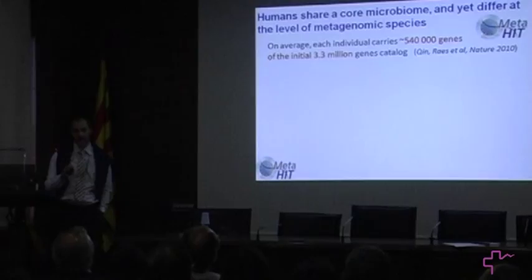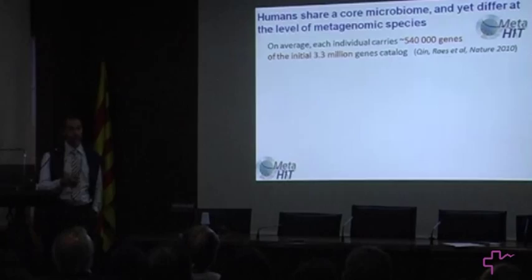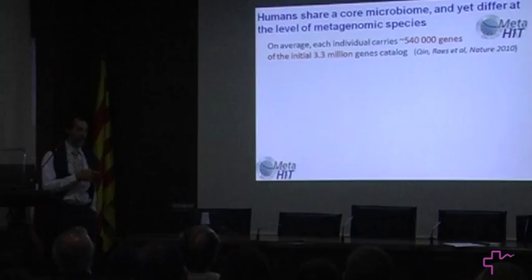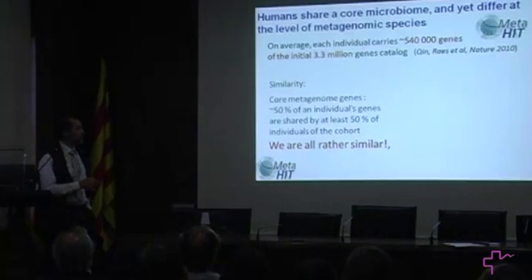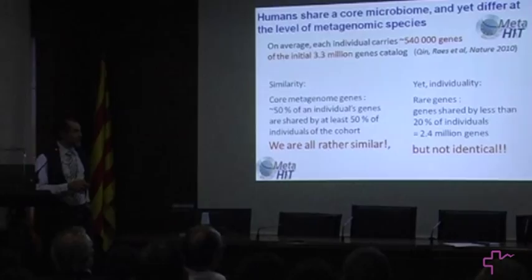What we learned is that on average, for each human individual, we have approximately 540,000 genes out of the initial 3.3 million gene catalog. We could question whether we are all similar or not, and whether we would find a metagenomic core as we had seen based on 16S. Indeed we do find similarity — a core metagenome when we compare the human population at the level of complete metagenome data — such that 50% of an individual's genes are shared by at least 50% of the people around you.